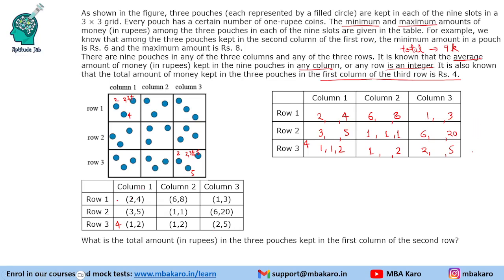Let us start with what we know: the total for the first column third row is 4, and one other total is 3. We need to make numbers that give multiples of 9. For row 3, the values can be 1, 1, 2 or 1, 2, 2, so the total can be 4 or 5. For the slot with range 2 to 5, instead of finding individual values let us think of the possible sum.